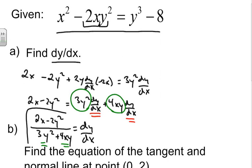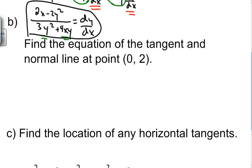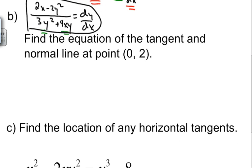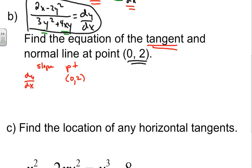That is our derivative. Now the next part: we want to find the equation of the tangent and normal line at the point (0, 2). For a tangent line, we need a slope and a point. Our point is (0, 2) and our slope is dy/dx. We substitute (0, 2) into dy/dx — plugging 2 into y gives us y squared equals 4, so the numerator becomes 2(0) minus 2(4), which is negative 8.